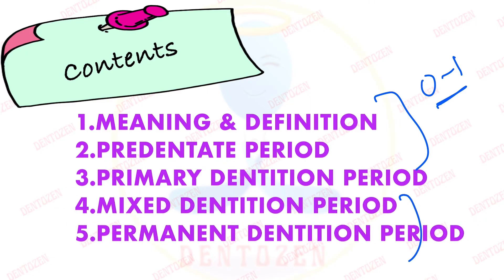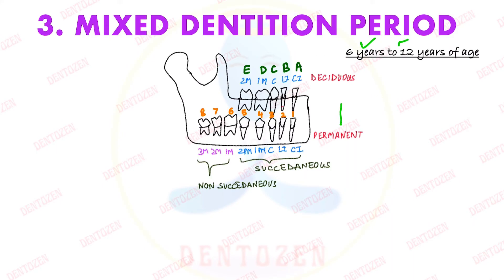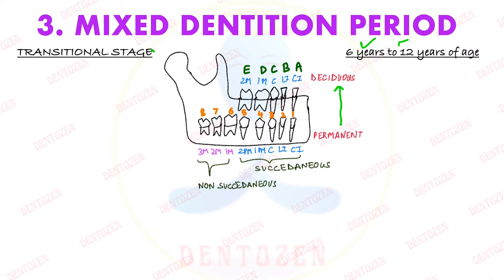So let's start with the mixed dentition period. It is from 6 to 12 years. What is happening here is that the permanent teeth are taking the place of deciduous teeth — change is happening. So this is also known as the transitional stage, but this change happens in three further steps.